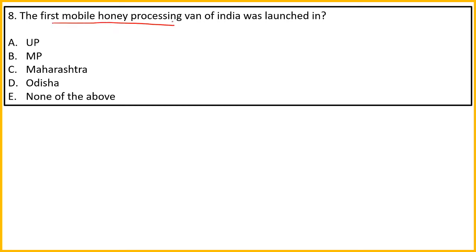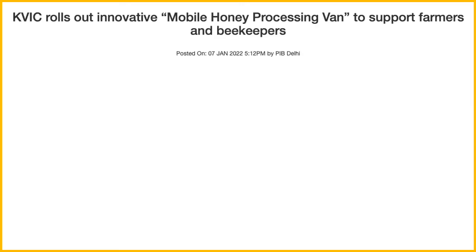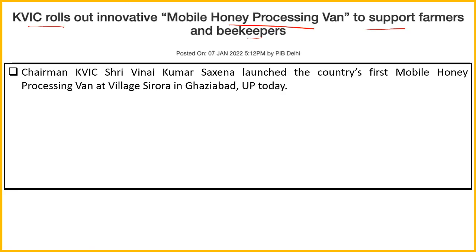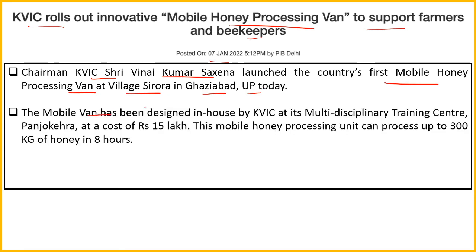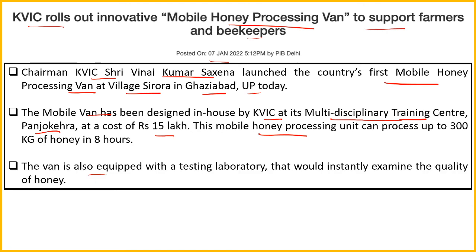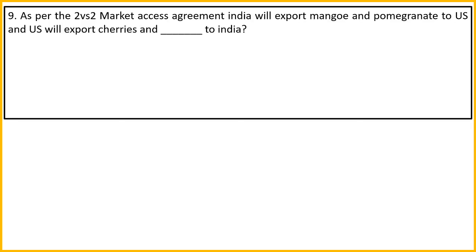Next question: Hindustan's first mobile processing van was launched in which state - UP, MP, etc.? KVIC launched a mobile honey processing van to support farmers and beekeepers. On 7 January 2022, KVIC Chairman Vinay Kumar Saxena launched the first mobile honey processing van in Sirora village, Ghaziabad district. The mobile honey processing unit can process up to 300 kg of honey in 8 hours and has an in-built testing laboratory for quick quality checks.